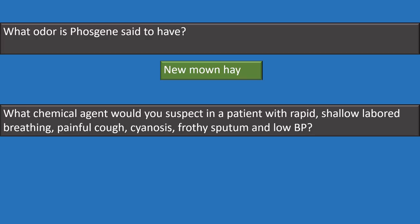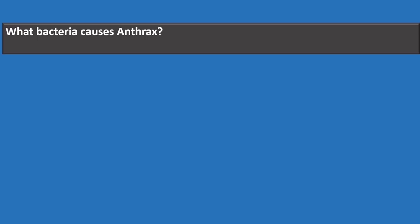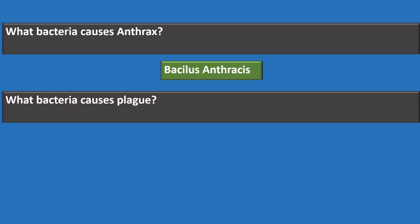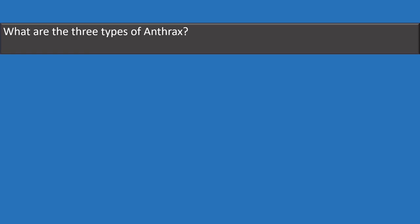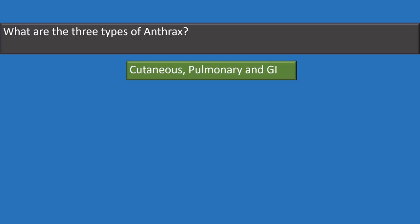A patient with rapid shallow labored breathing, painful cough, cyanosis, frothy sputum, and low blood pressure indicates pulmonary agents. The bacteria causing anthrax is Bacillus anthracis. Plague is caused by Yersinia pestis. Tularemia is caused by Francisella tularensis. The three types of anthrax are cutaneous, pulmonary, and gastrointestinal.